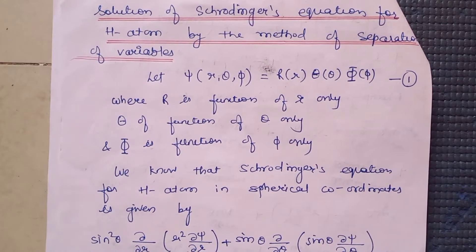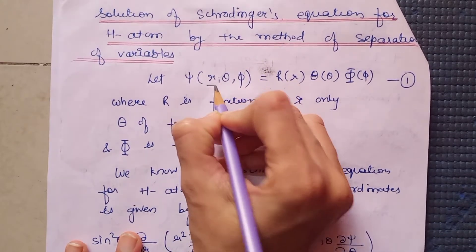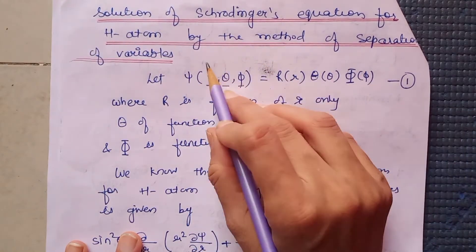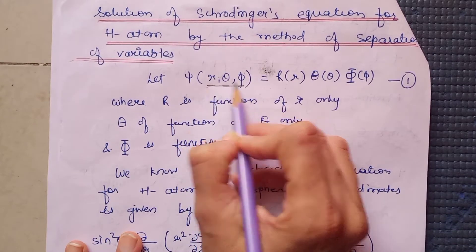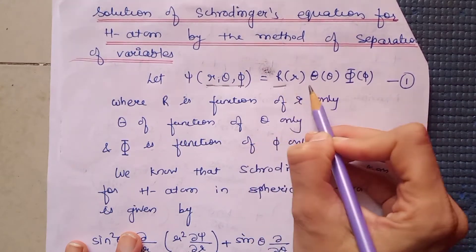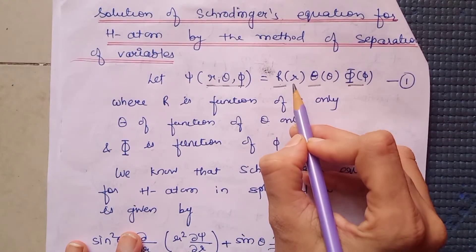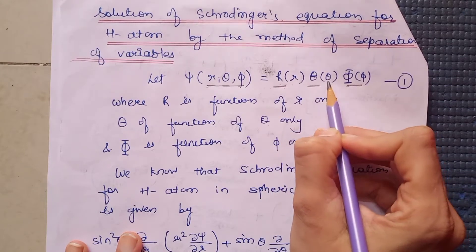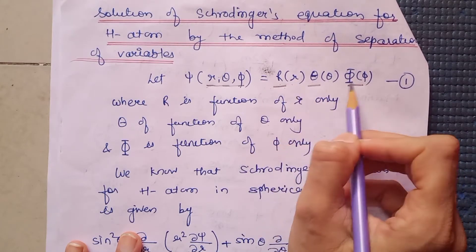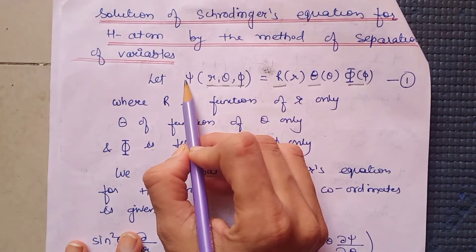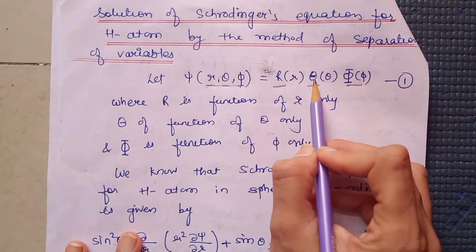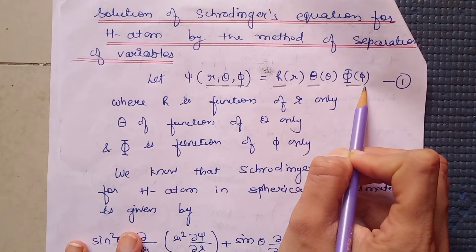We know that wave function ψ depends upon r, θ, and φ. Using the method of separation of variables, we assume that wave function ψ is the product of three functions R(r), Θ(θ), and Φ(φ), where R is a function of r only, Θ is a function of θ only, and Φ is a function of φ only.